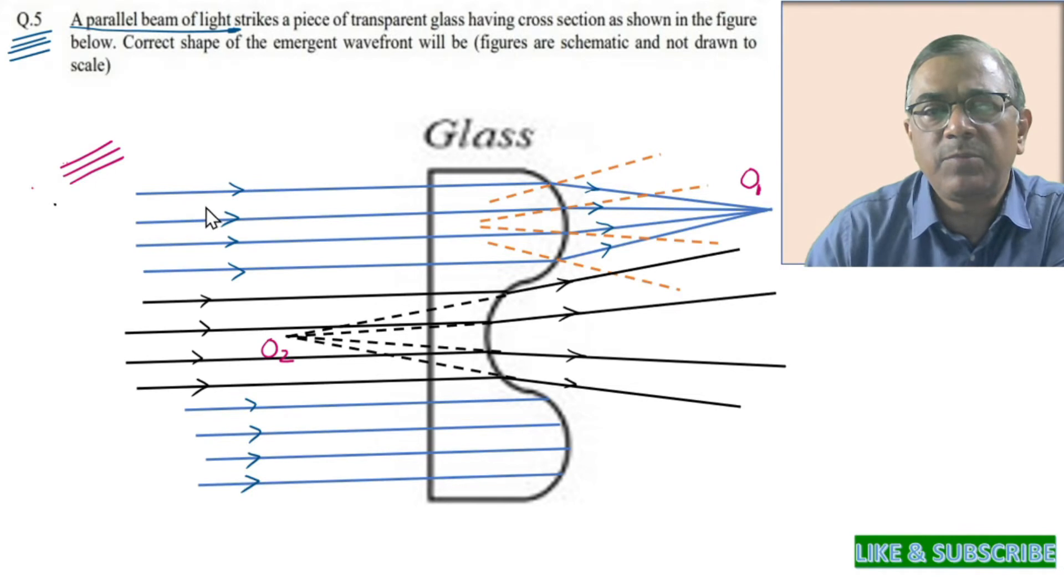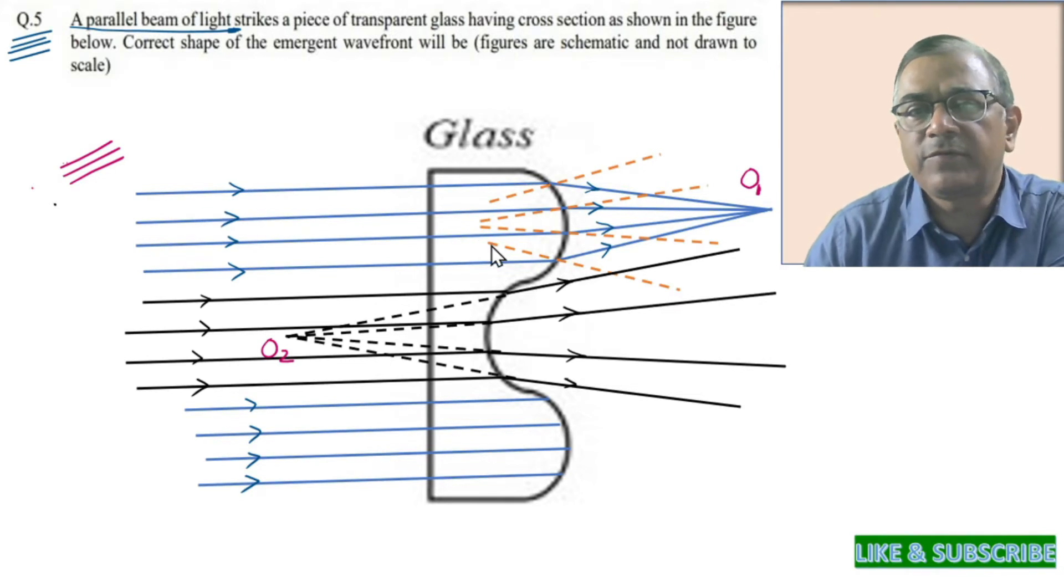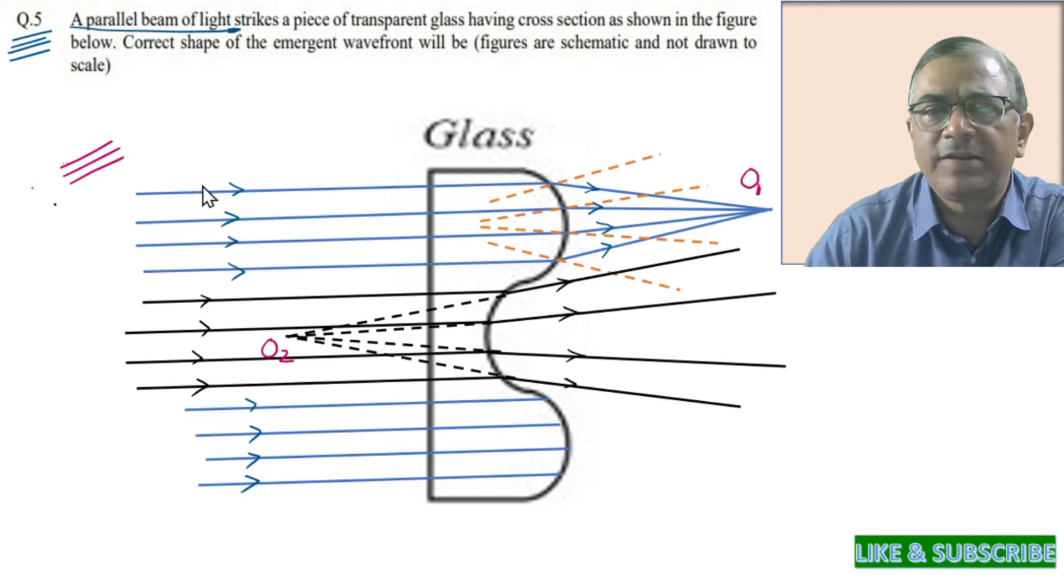A parallel beam of light is incident on this piece of transparent glass. As parallel beam of light strikes upon this piece of transparent glass, the incident wavefront has to be a plain wavefront shown by this straight line.